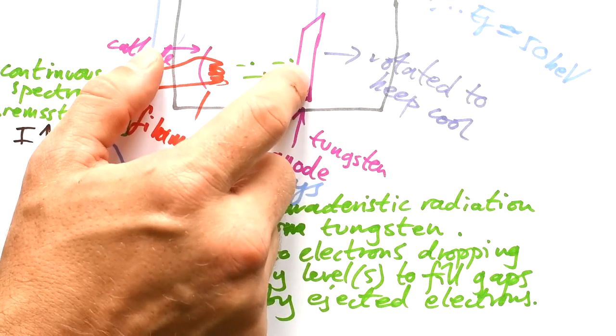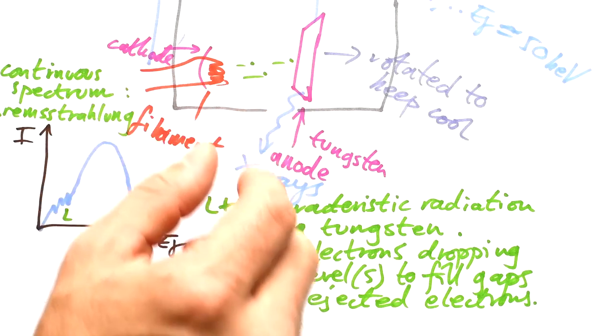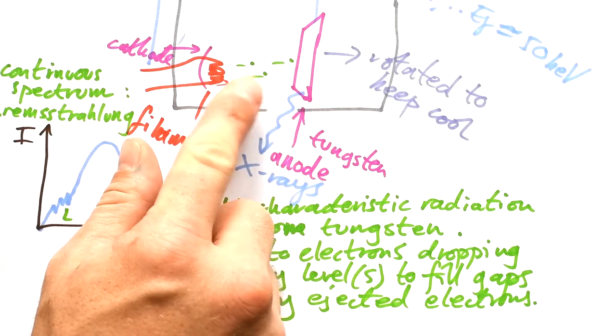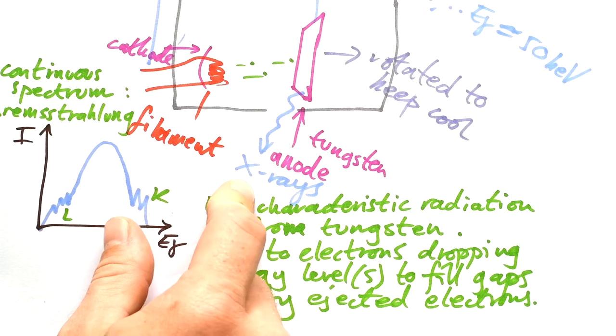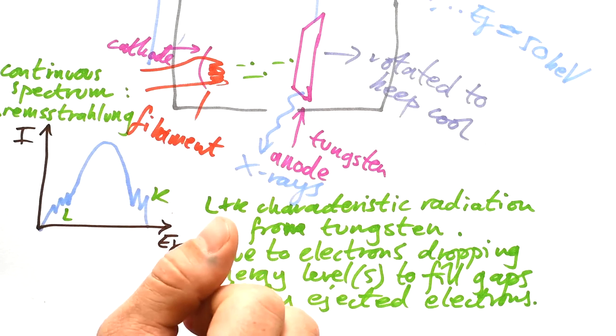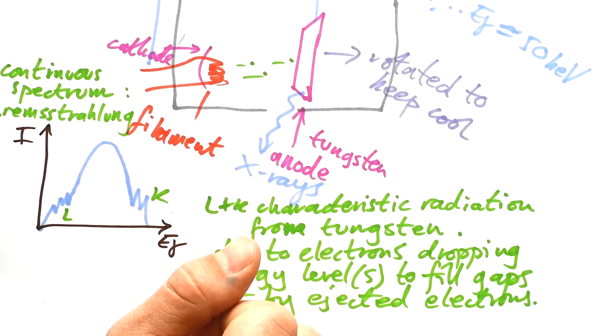If you keep the current the same, but you change the PD across the cathode and the anode, that means the electrons are going to have more energy. That means that the X-rays will have more energy. Again, you've just made the beam more intense.